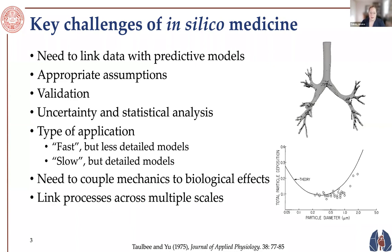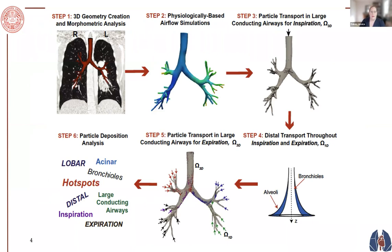In general we use a framework where we build computational 3D geometric models from CT images — chosen because they have high enough resolution to build nice models. We then perform airflow simulations and particle tracking through inspiration. Particles are typically one-way coupled, so the flow field impacts the particles but not vice versa. This 3D model covers only about three to five percent of the total lung volume.